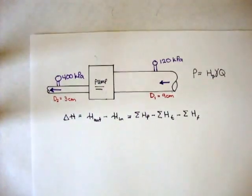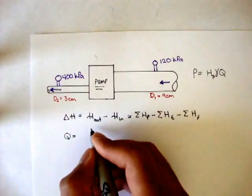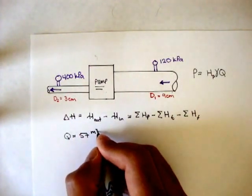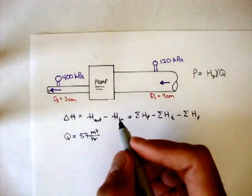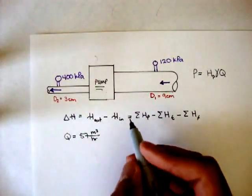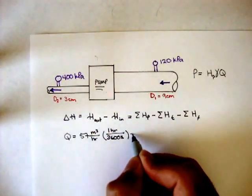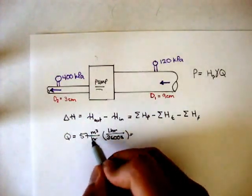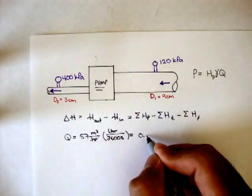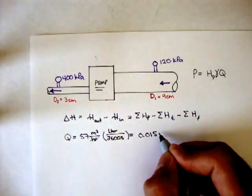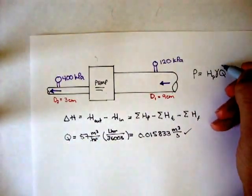So the very first thing we should do is they give us the volumetric flow rate. They give us Q, and that's equal to 57 meters cubed per hour. And we should change that to meters cubed per second, because that's the standard units we use in fluid mechanics. And so in one hour, there's 3600 seconds. And if you solve that out, the hours cancel out, and we're left with meters cubed over seconds, which is what we want. And that's equal to 0.015833 meters cubed per second. So we found Q.